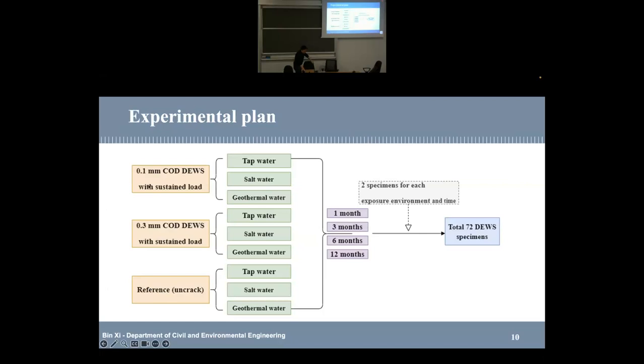So this is the whole experimental plan. We have two kinds of crack width, 0.1 mm and 0.3 mm. And we also use the reference specimen in different water. And we want to check mechanical property and self-healing property changes. So we observe in different observation times: one month, three months, six months, and 12 months.